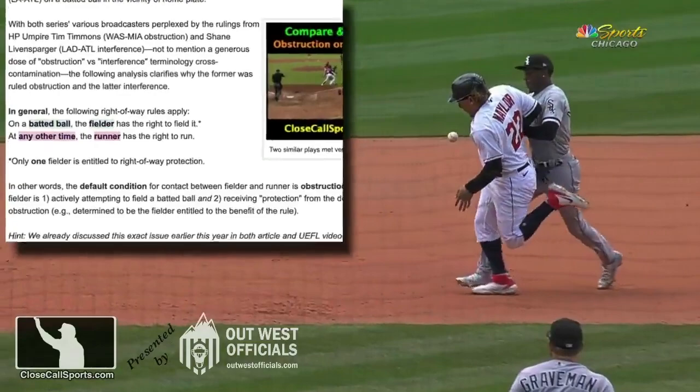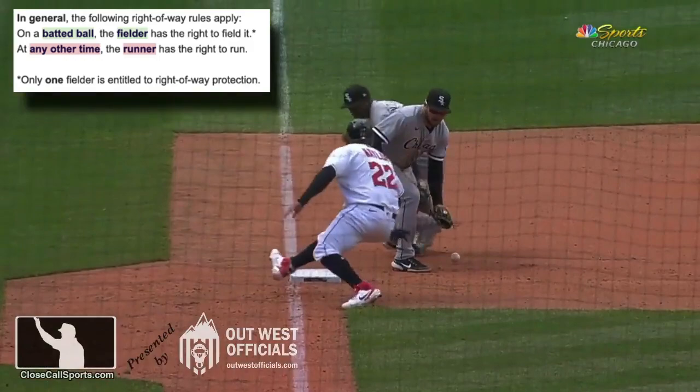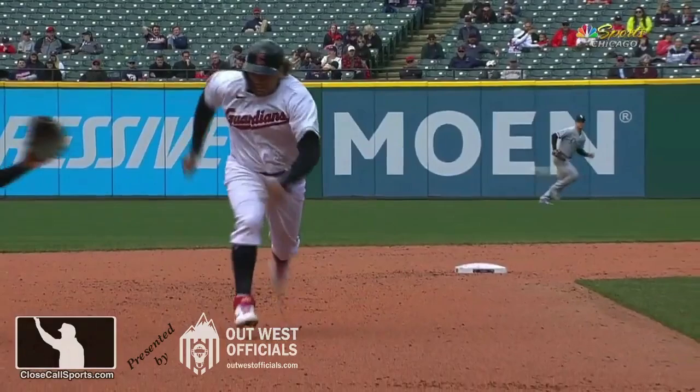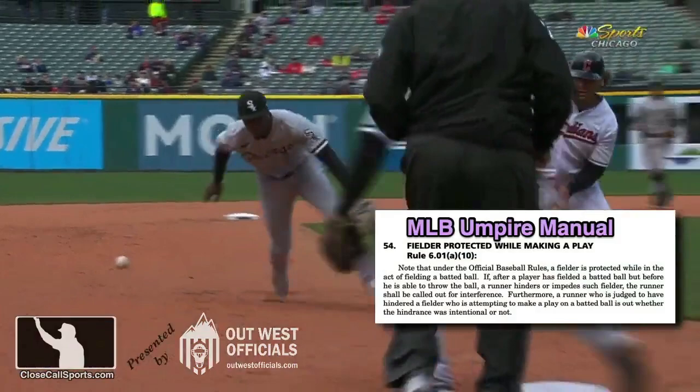The rule of thumb is that on a batted ball the fielder has the right to field the ball, whereas the runner has the right-of-way at any other time except a batted ball. We also talked about how the fielder retains the right-of-way even if the ball deflects off themselves, as long as the ball remains in their immediate reach.